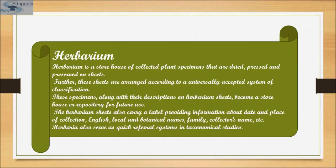For example, conifer cones and palm fronds may be stored in labeled boxes. Representative flowers or fruits may be pickled in formaldehyde to preserve their three-dimensional structure. Small specimens such as mosses and lichens are often air-dried and packaged in small paper envelopes. No matter the method of preservation, detailed information on where and when the plant was collected, its habitat, color, and the name of the collector is usually included.